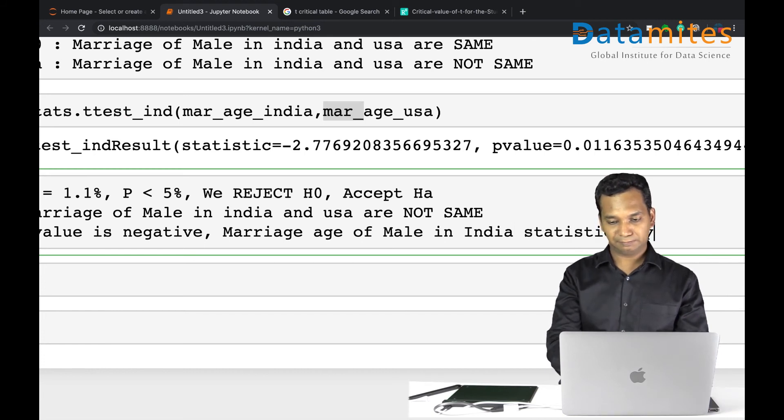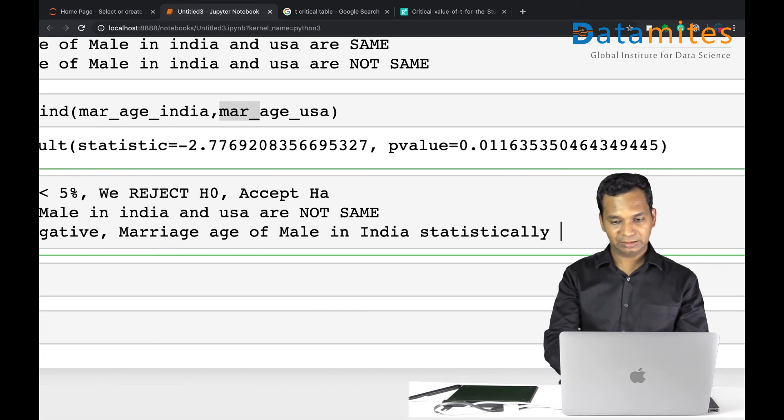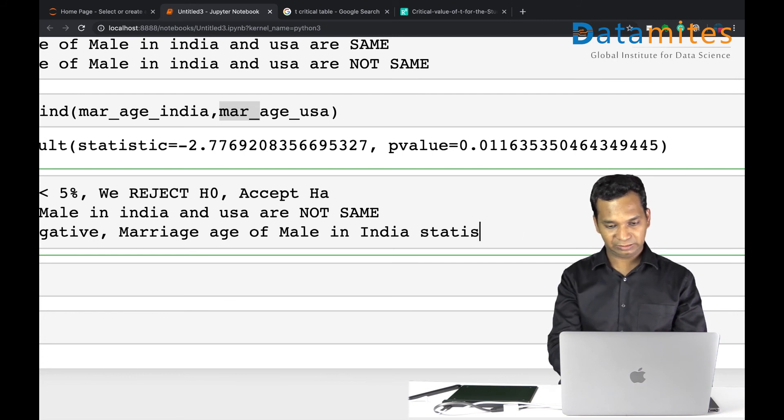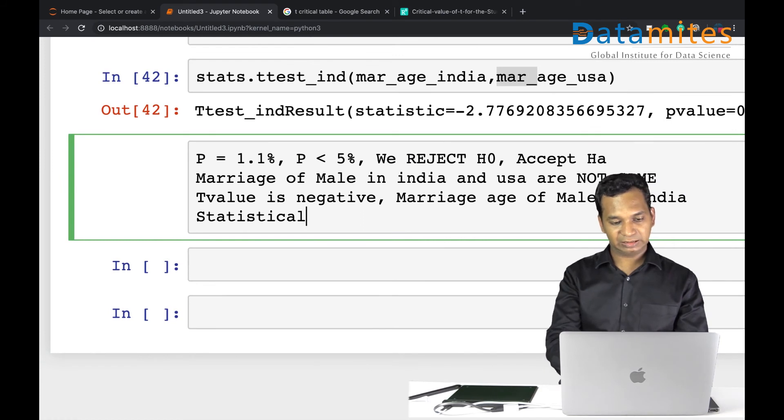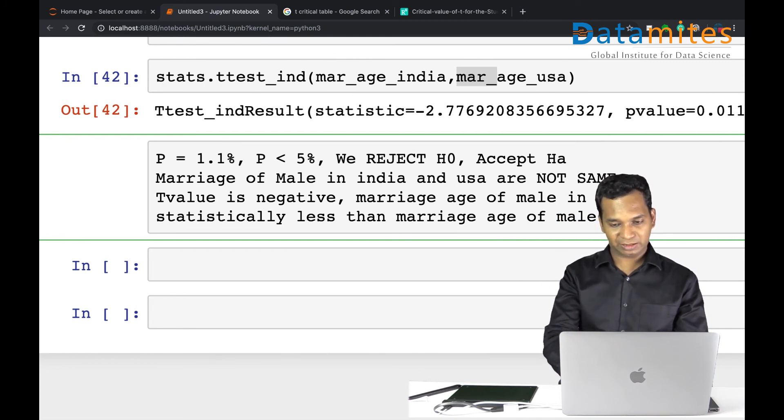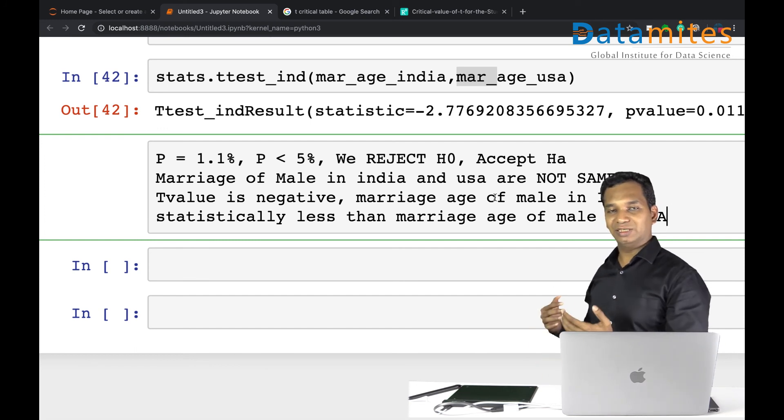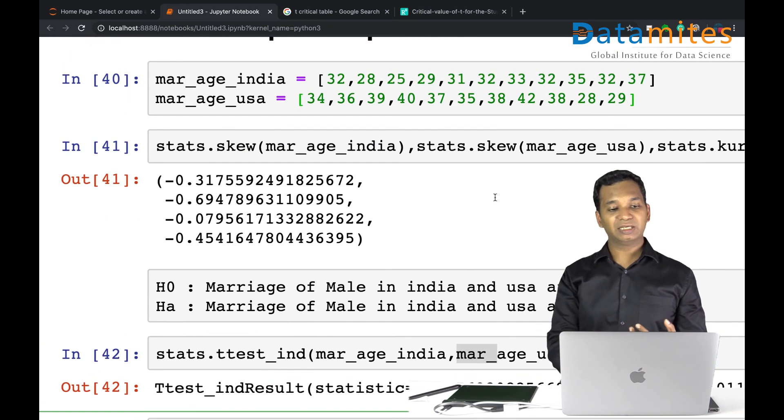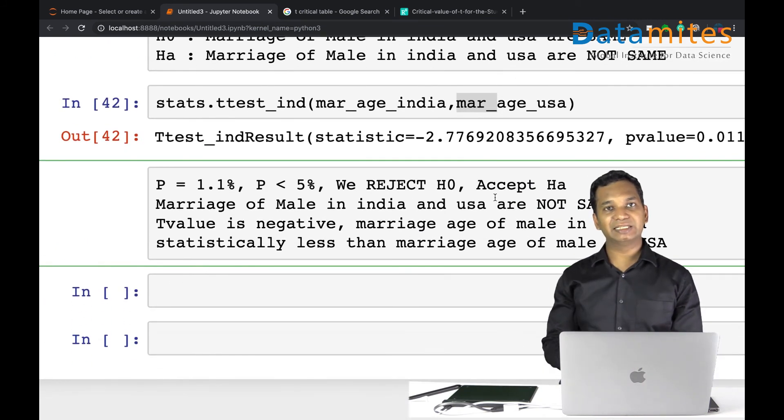Marriage age of male in India is statistically less than marriage age of male in USA. Great. So we have done a statistical research. If you could collect the data through Facebook, like India and USA, like I mentioned, you could actually do this research for real and statistically prove that India has a marriage age, male marriage, is statistically less than the marriage age of male in USA. And this is called two sample independent t-test.